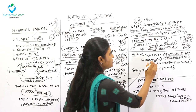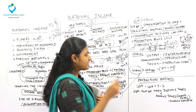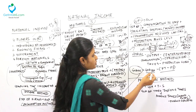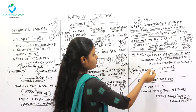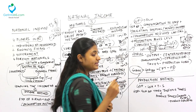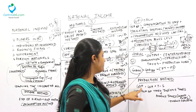GVA at factor cost equals output minus intermediate consumption minus production taxes minus production subsidies. The formula differs from GVA at basic prices in that production taxes less subsidies are subtracted rather than added. Please keep this formula in mind.